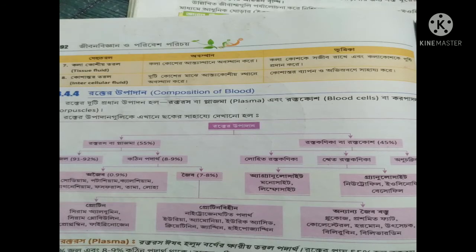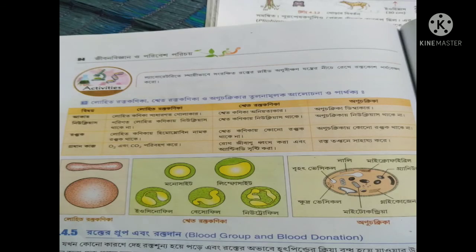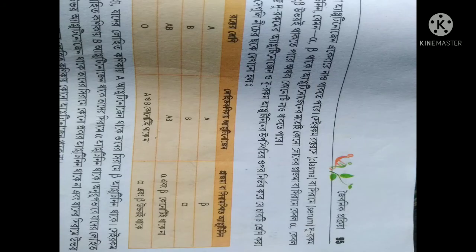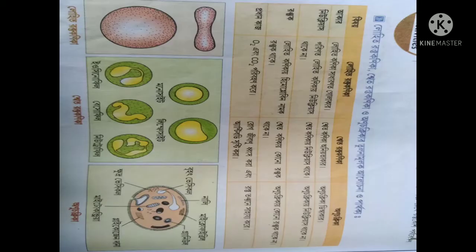This is about blood and its different compositions. Blood corpuscles include RBCs associated with transportation, WBCs with defense, and platelets. Here we see the ABO blood group system based on agglutinogen in RBCs and the antibody in plasma.